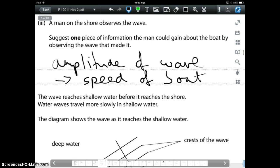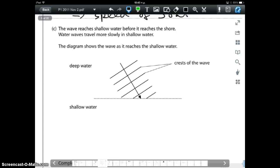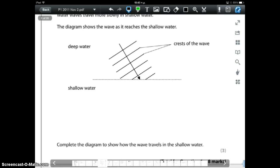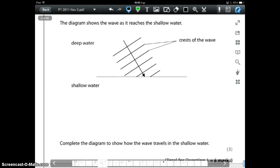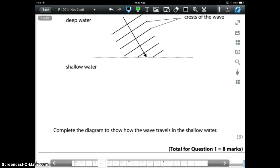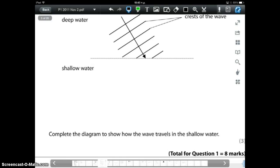The wave reaches shallow water in Part C now. The wave reaches shallow water before it reaches the shore. Waves travel more slowly in shallow water. The diagram shows the wave as it reaches shallow water. And we are to complete the diagram. Well at this point it is good to use a ruler to draw things accurately.